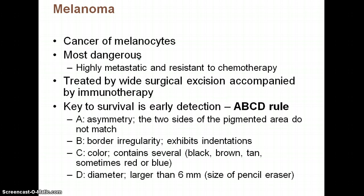The key to survival is early detection. There is the ABCD rule: A is asymmetry — do the two sides of the pigmented area match? B is border irregularity. C is for color — does it contain several different colors? And D is diameter — anything larger than 6 millimeters is a concern.